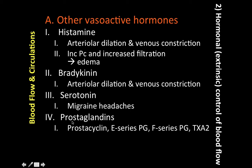The last vasoactive hormone group is the prostaglandins, which includes prostacycline, the E-series prostaglandins, the F-series prostaglandins, and thromboxane A2. Prostacycline is a vasodilator in several vascular beds. The E-series prostaglandins are also vasodilators. The F-series prostaglandins are vasoconstrictors. Thromboxane A2 is also a vasoconstrictor. To summarize: prostacycline and E-series are vasodilators; F-series and thromboxane A2 are vasoconstrictors.